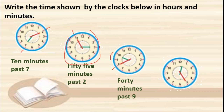The hour hand is between 12 and 1, and the minute hand is on 5, which is 25 minutes. So we can say 25 minutes past 12. You know how to read this in terms of minutes and hours.